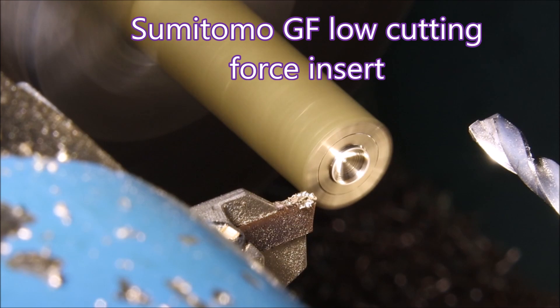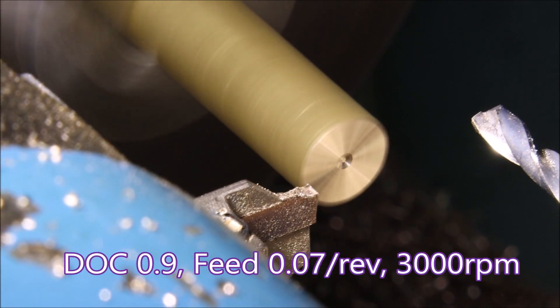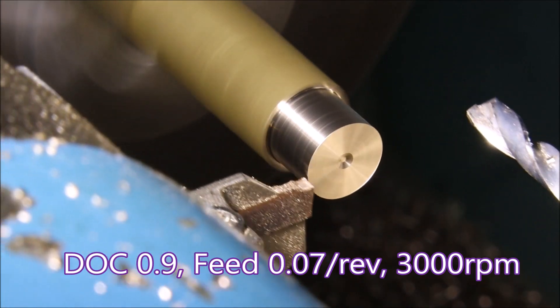This Sumitomo GF low cutting force insert is actually meant for grooving but I'm using it for side cutting as well.